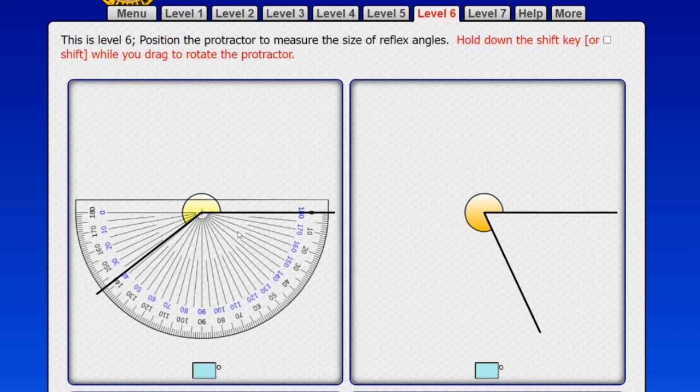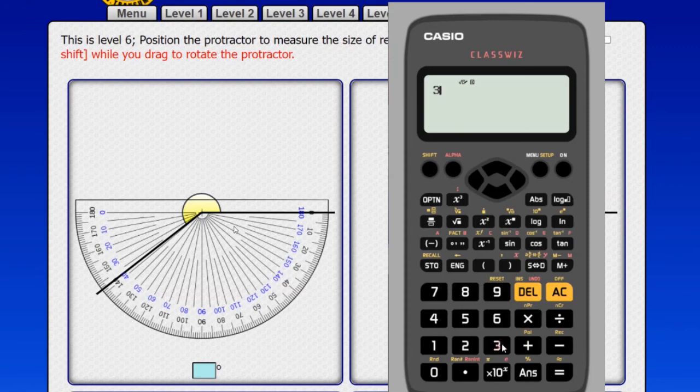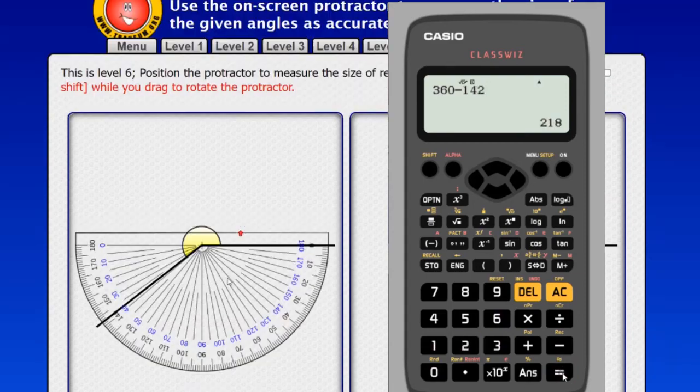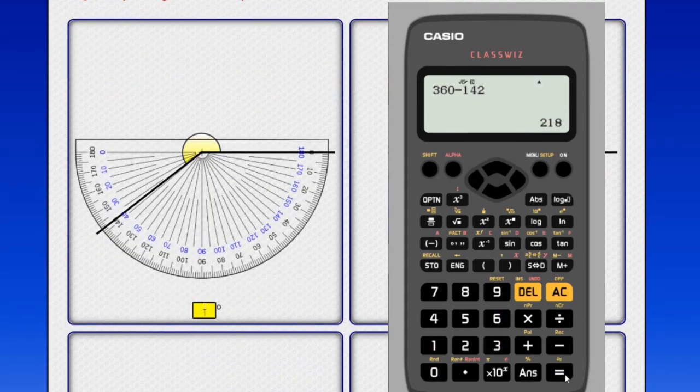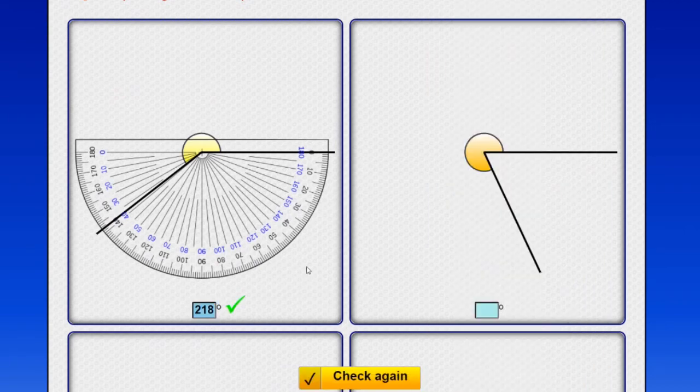So if I measure this part down here, starting up with the zero, that's 142 degrees. Well, 142. Now, in a complete circle, there are 360 degrees. So if 142 degrees are not included in that angle, if I subtract 142 from 360, that should tell me what's left. 218 degrees. So that seems to be a good trick to use.